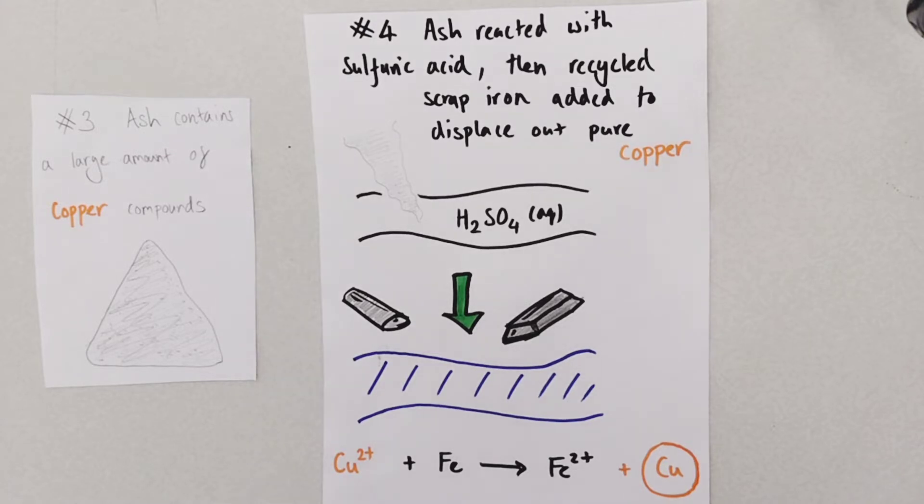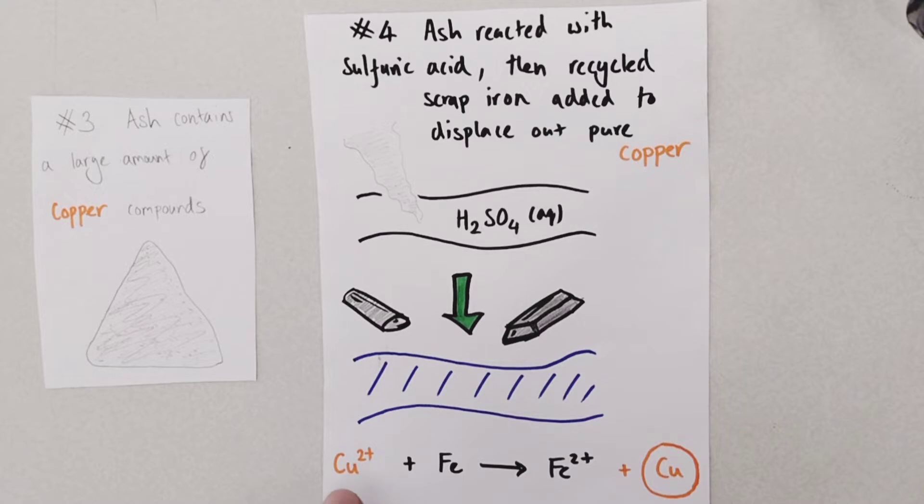This is actually an example of a redox or oxidation and reduction reaction because when the iron reacts with the copper ions we form Fe2+ ions and copper. So the iron is being oxidized from Fe to Fe2+ whilst the copper is being reduced by gaining electrons from Cu2+ ions to pure copper.